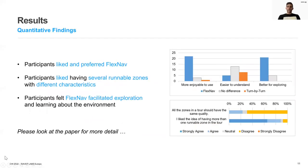Looking at the quantitative results from the questionnaires, we can see that most people like and prefer FlexNav over turn-by-turn navigation support. While FlexNav is a new system and might be initially more challenging to understand, it was deemed more enjoyable to use and better for exploring compared to turn-by-turn navigation. Participants also appreciated having several runnable zones with different characteristics and considered that FlexNav facilitated exploration and learning about the environment.